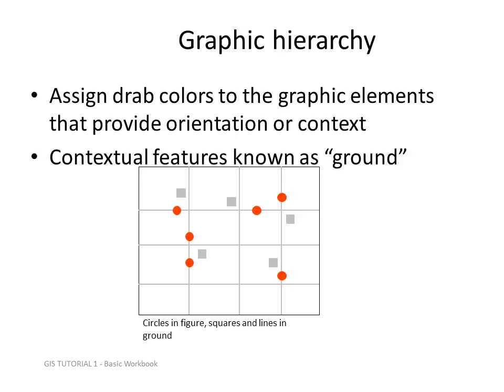In Chapter 2, you'll be doing a map where you create ground features and place them in a less noticeable position in the map. Then you can bring out the data you want to highlight by using brighter or darker colors to make those features stand out.